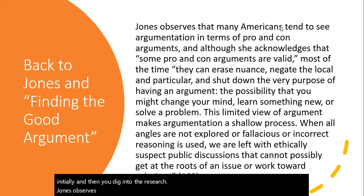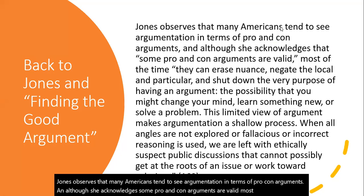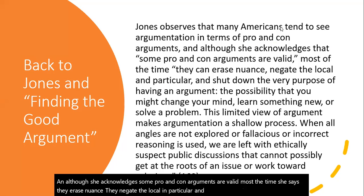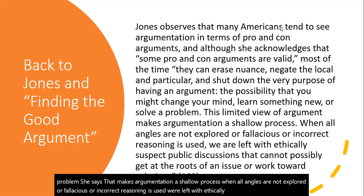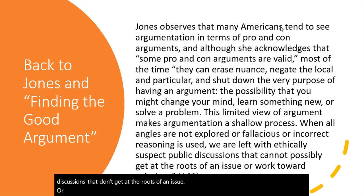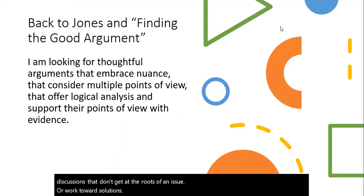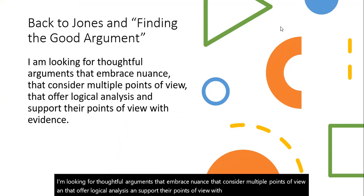Jones observes that many Americans tend to see argumentation in terms of pro-con arguments. And although she acknowledges some pro and con arguments are valid, most of the time she says they erase nuance. They negate the local in particular and shut down the very purpose of having an argument: the possibility that you might change your mind, learn something new, or solve a problem. She says that makes argumentation a shallow process. When all angles are not explored or fallacious or incorrect reasoning is used, we're left with ethically suspect public discussions that don't get at the roots of an issue or work towards solutions. I'm looking for thoughtful arguments that embrace nuance, that consider multiple points of view, and that offer logical analysis and support their points of view with evidence. That's what this paper will be.